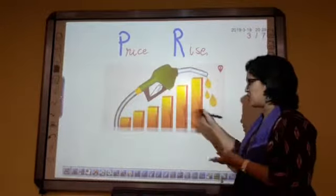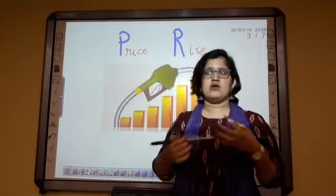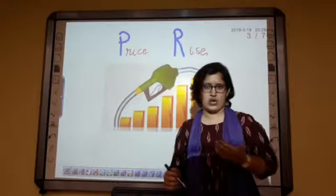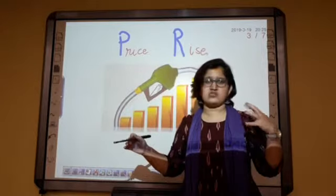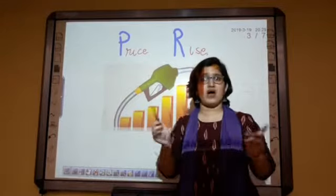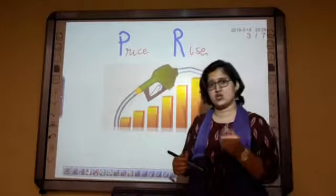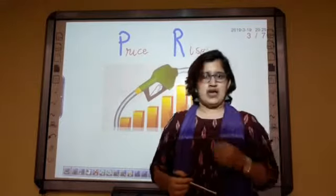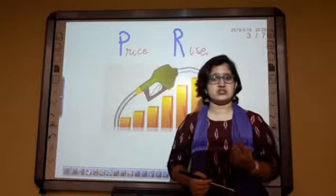For example, petrol is a commodity used by the majority of people on a daily basis. From a person who works in a shop to a person who owns that shop, both are using this commodity. So when the price of such commodities used by the maximum population increases, that is price rise, and price rise is one of the major reasons of poverty.